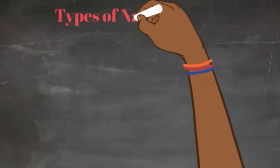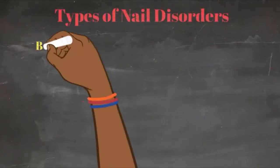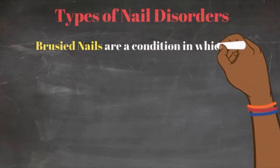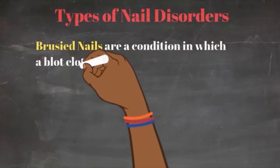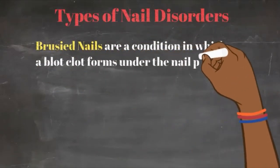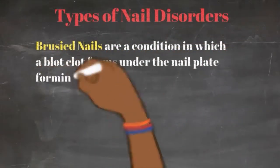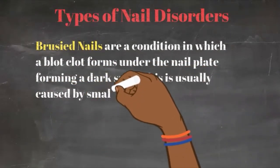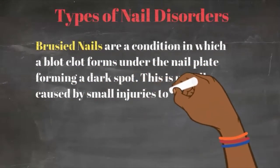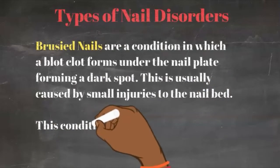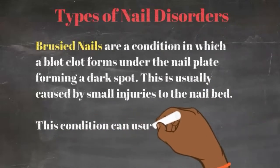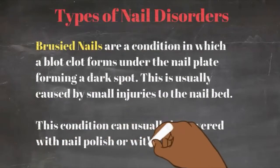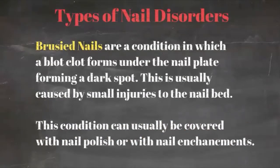Let's go over some of the types of nail disorders that you will come in contact with as a nail tech. The first one would be a bruised nail. Bruised nails are a condition in which a blood clot forms underneath the nail plate, forming a dark spot. This is usually caused by a small injury to the nail bed. This condition can be covered with nail polish or any type of enhancement — we just want to be mindful that there's no physical blood while performing the service.